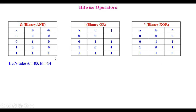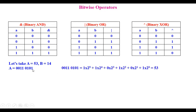Let us see how they are operated on two values, A and B. Let us take A as 53 and B as 14. First, let us convert A into bits. When converted to bits, we get 0, 0, 1, 1, 0, 1, 0, 1. Starting from the right side, we multiply these values with 2 power 0, 2 power 1, 2 squared, 2 cubed, 2 power 4, and so on. This is binary. So the value 53 is obtained like that.